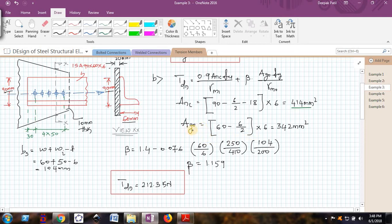Similarly, when I try to find out the gross area of the outstanding leg, the outstanding leg width is 60 mm. So 60 minus 6 by 2, no need of any deduction of holes, multiplied by the thickness. I am getting 342.